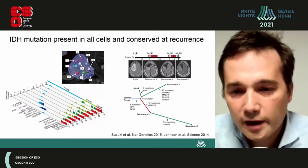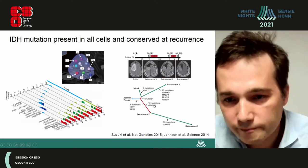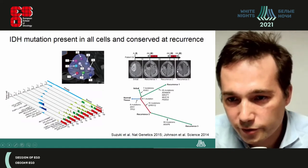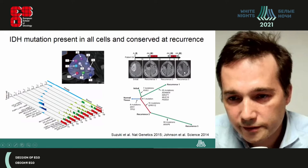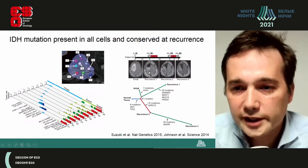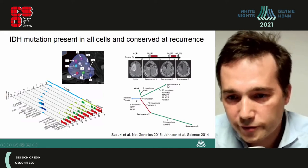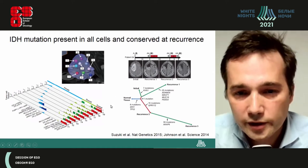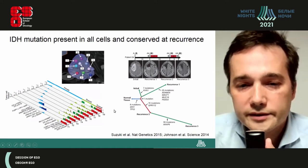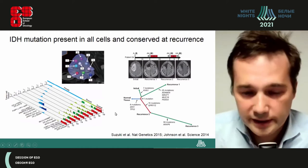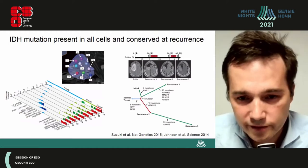Very interestingly, when genomic analyses were performed in different recurrences across time, the IDH mutation in most cases is found in the recurrence. This slide makes you understand that the IDH mutation is a particularly attractive target.